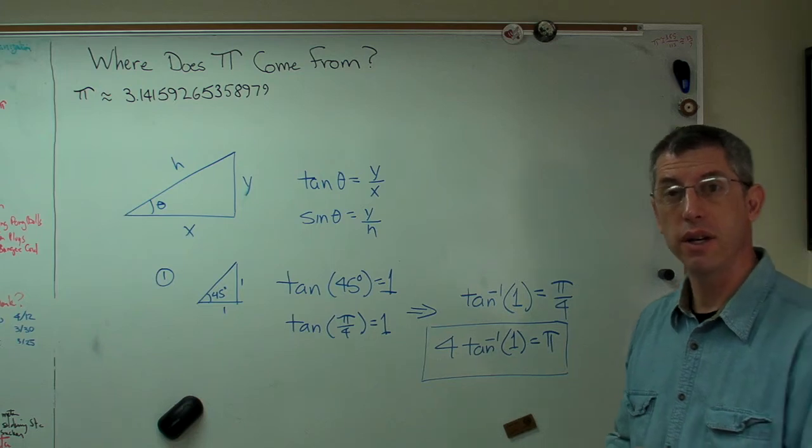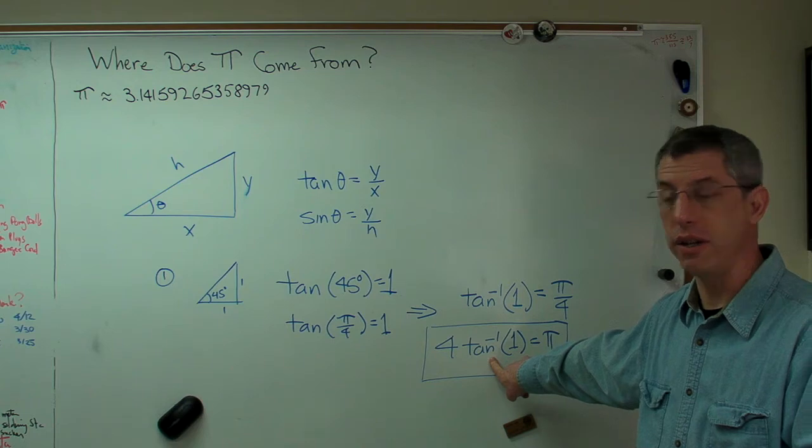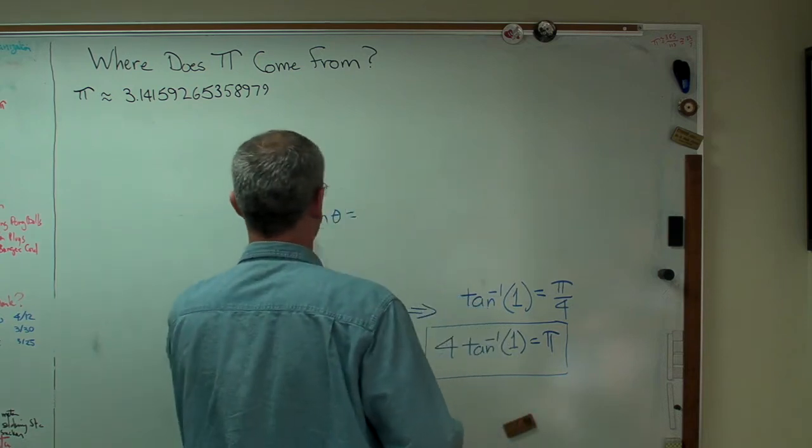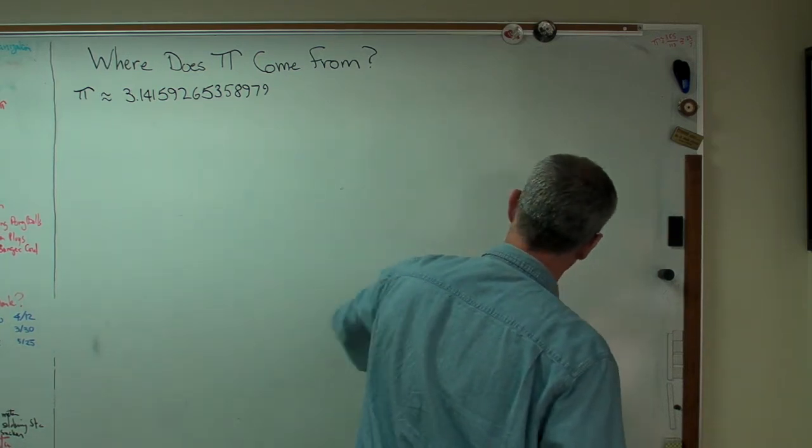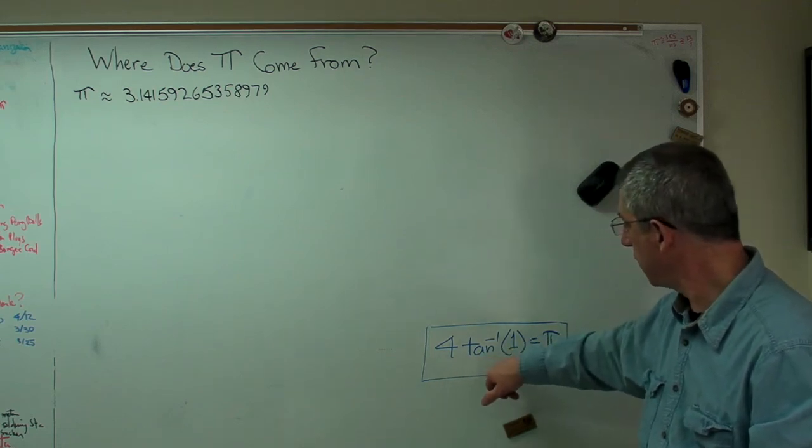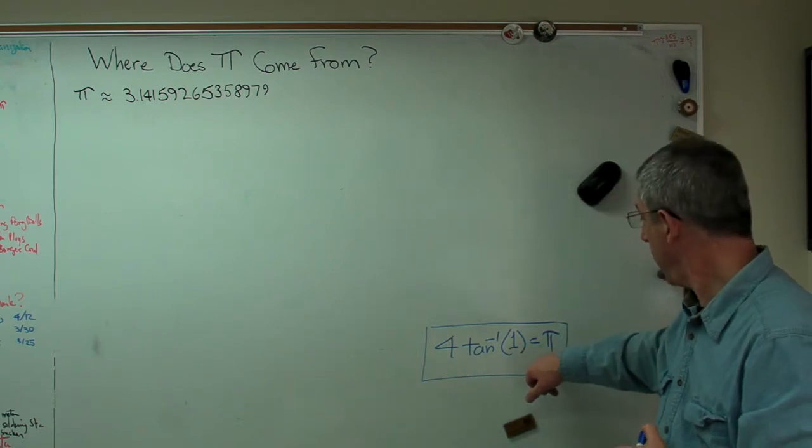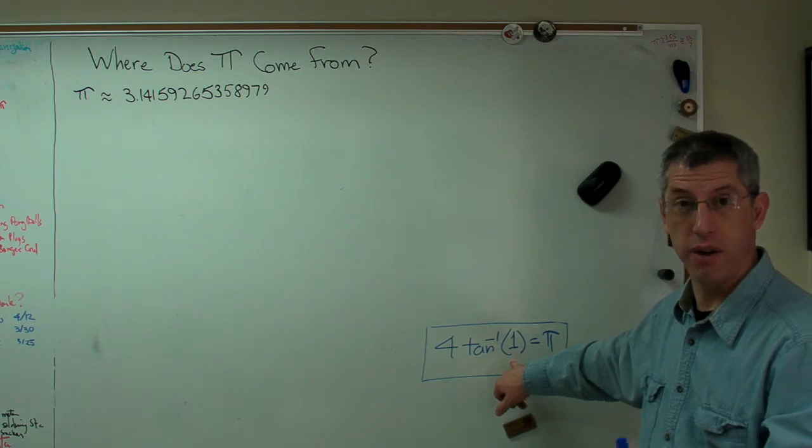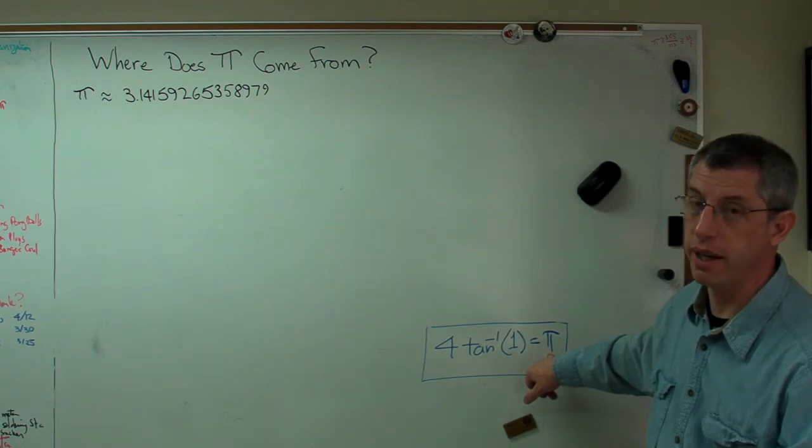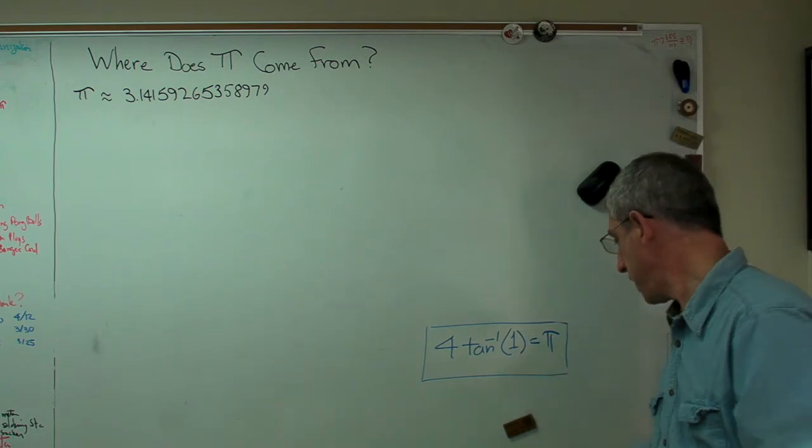There is a simple Taylor series expansion for inverse tangent. The game we're trying to play here is if I've got pi on one side and 4 times this expression here, if I could write out this expression in some simple way, and better yet if it was a series with an infinite number of terms, I could make my approximation as precise as I wanted just by adding more terms. That's how this works.